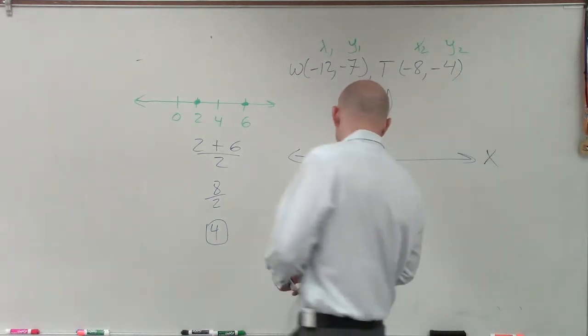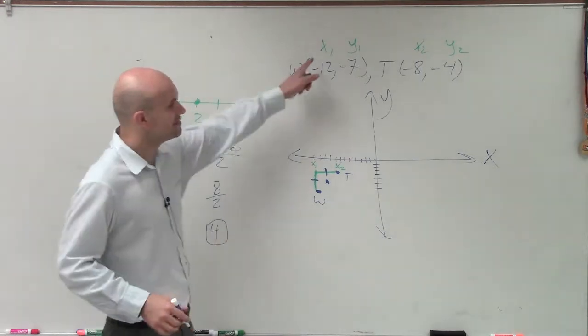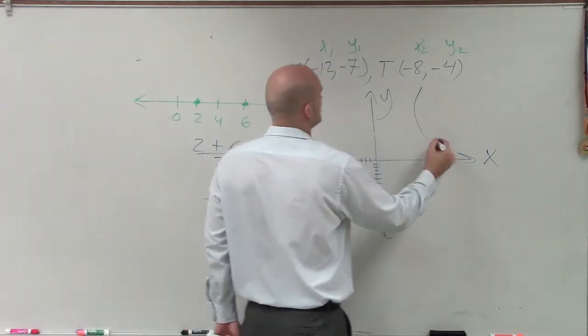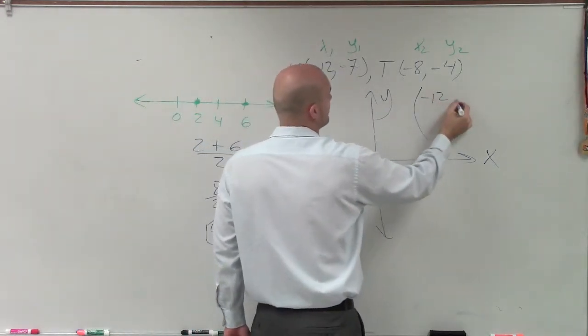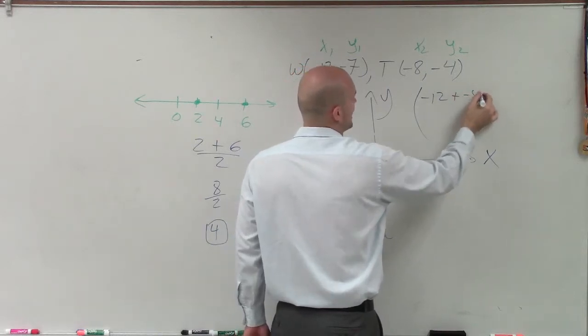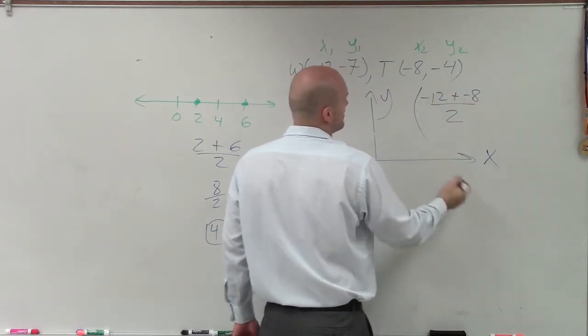So what you'll do, ladies and gentlemen, is just define the average of x1 and x2. So do negative 12 plus negative 8 and divide it by 2.